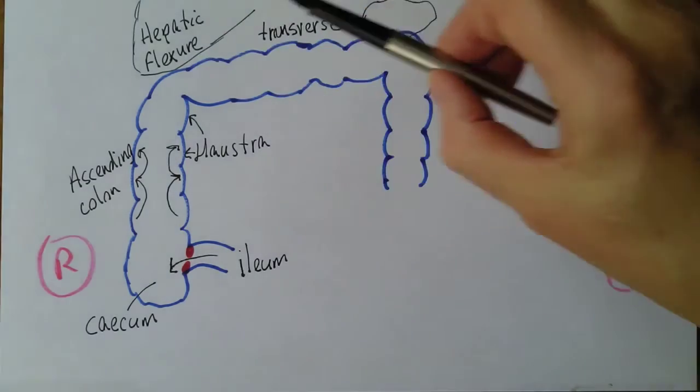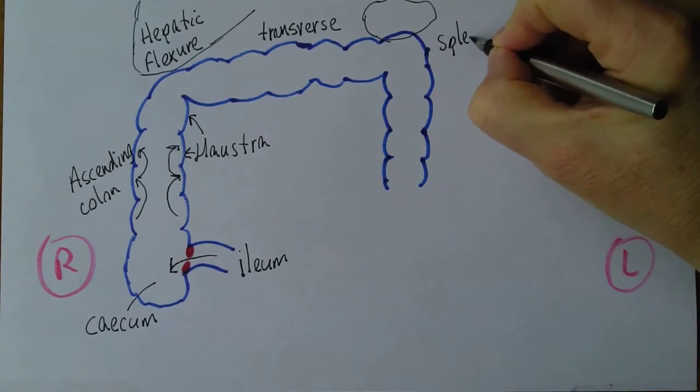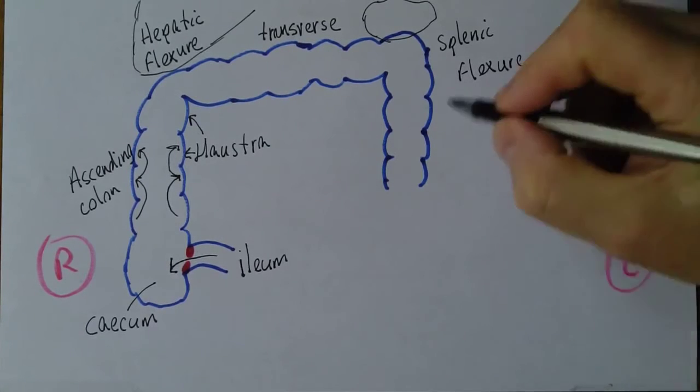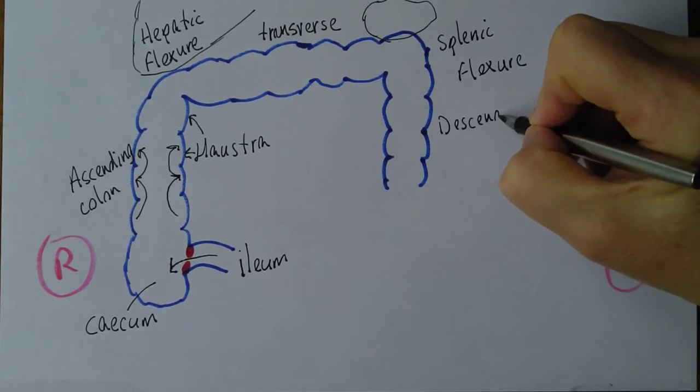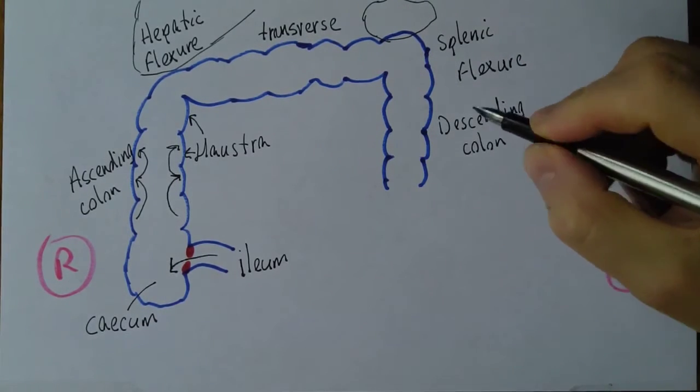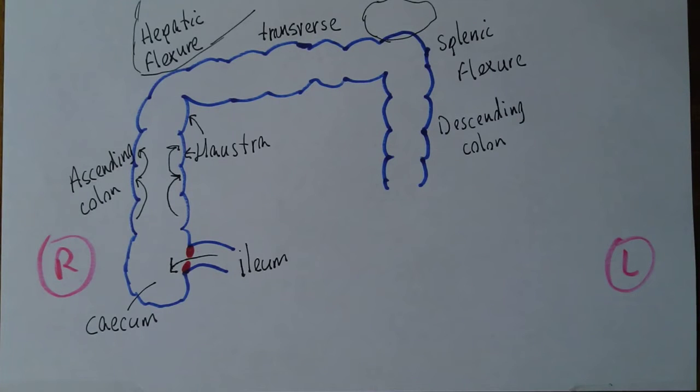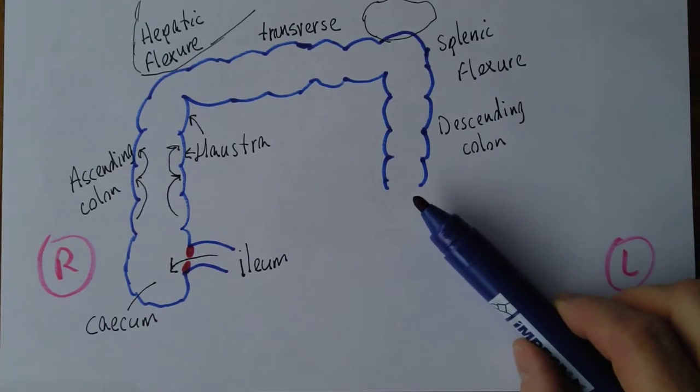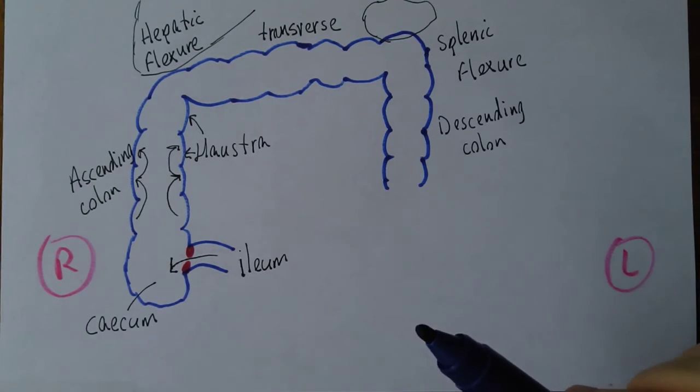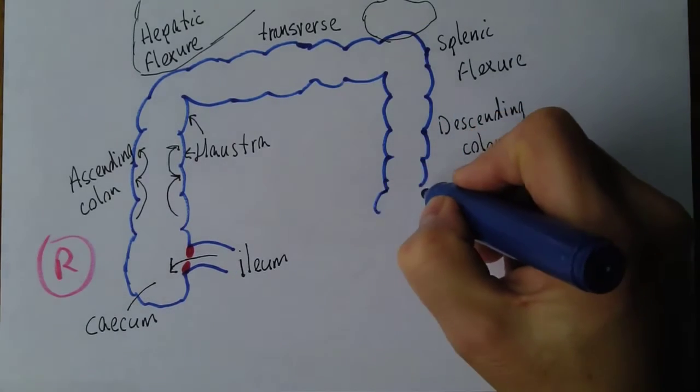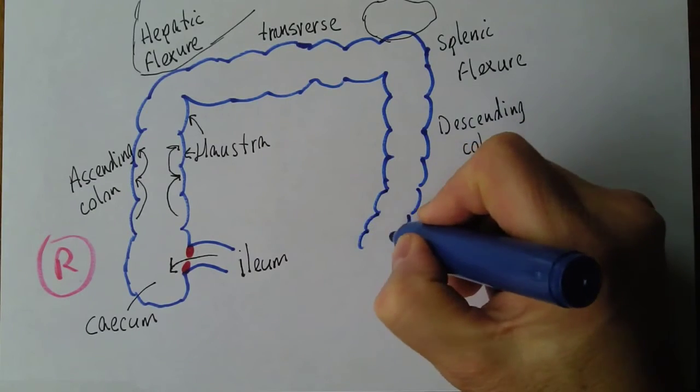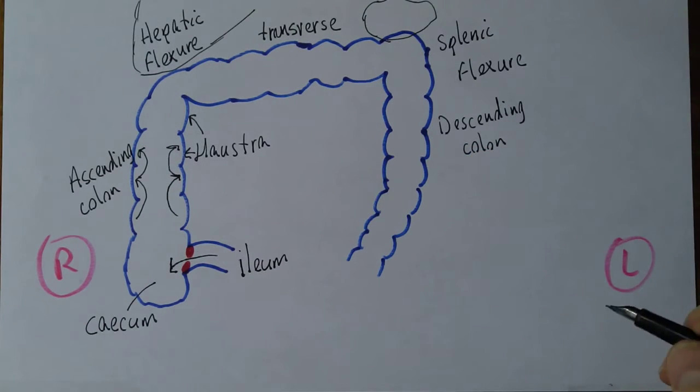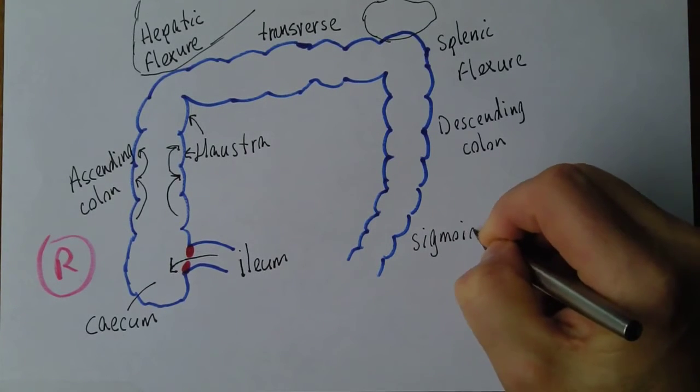So we've got the bend by the liver, the hepatic flexure, this is the bend by the spleen, splenic flexure. Then as it goes down this is the descending colon and it goes down to round about the level of the top of your hip bone, your iliac crest. When it gets to that level we've got to go from the left side towards the midline now, we've got to go back to get to the rectum, so there's another stretch of colon there and that stretch taking it back the way is the sigmoid colon.